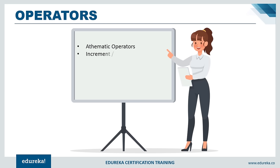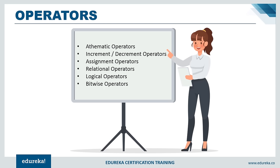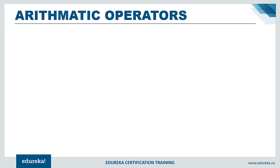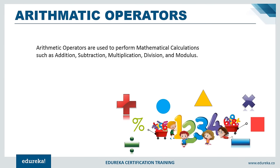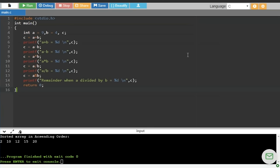Now let us move on to operators in C. We have arithmetic, increment/decrement, assignment, relational, logical, and bitwise operators. Arithmetic operators perform mathematical calculations: addition, subtraction, multiplication, division, and modulus. Let us go through a simple program demonstrating all arithmetic operators in C.